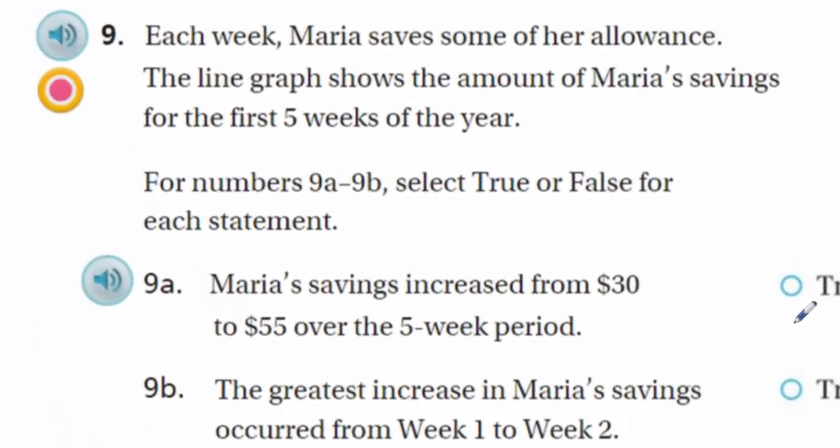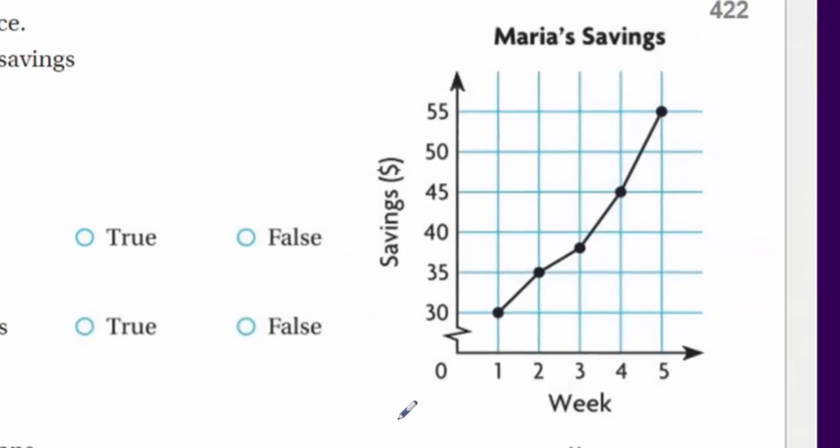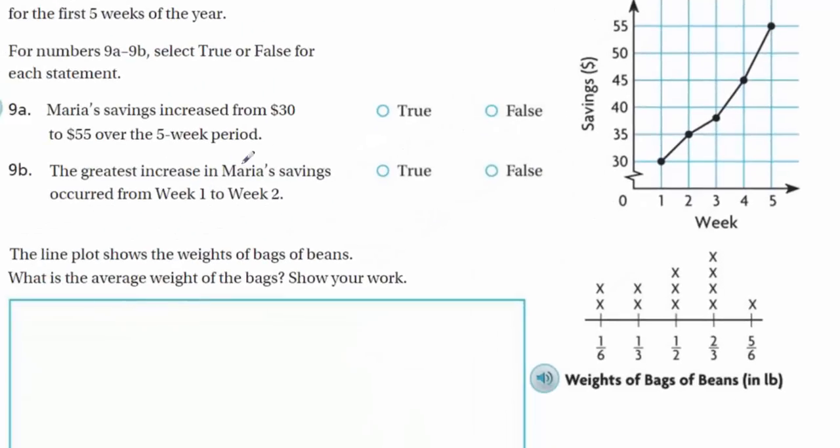Okay, it says each week, Maria saves some of her allowance. The line graph shows the amount of Maria savings for the first five weeks of the year. It says for numbers 9A through 9B, select true or false for each statement. Well, let me first take a look at the graph. Here we have week. Okay, it shows the week 1, 2, 3, 4, 5. Here it shows the savings. And here it jumps to 30. So here we have 30, 35, 40, 45. Okay. And so it says Maria's savings increased from $30 to $55 over the five-week period. Was that true? Well, the five-week period would start on week 1. She did have 30. And by week 5, she has 55. So from 30 to 55. It did increase. Yes, that's absolutely true. Yes, you get to be true.